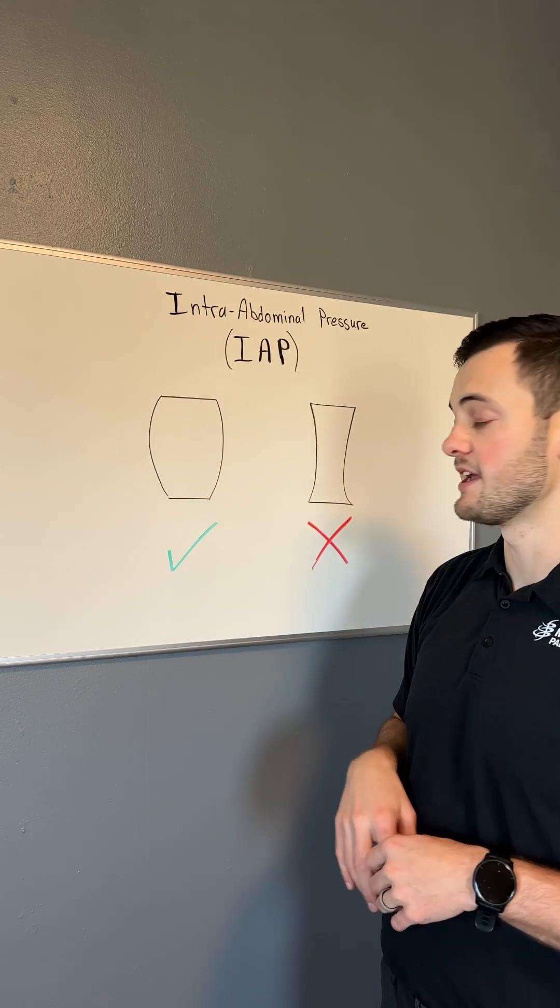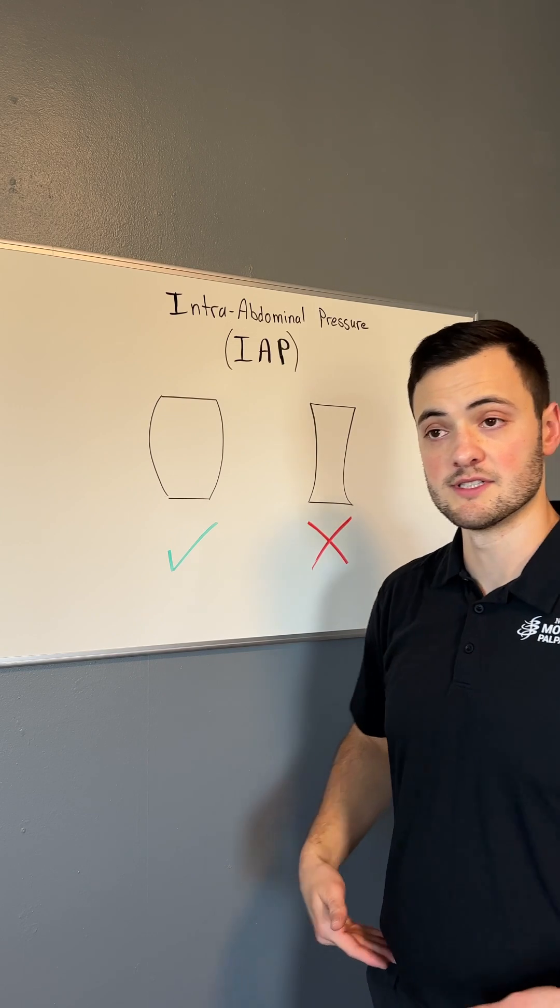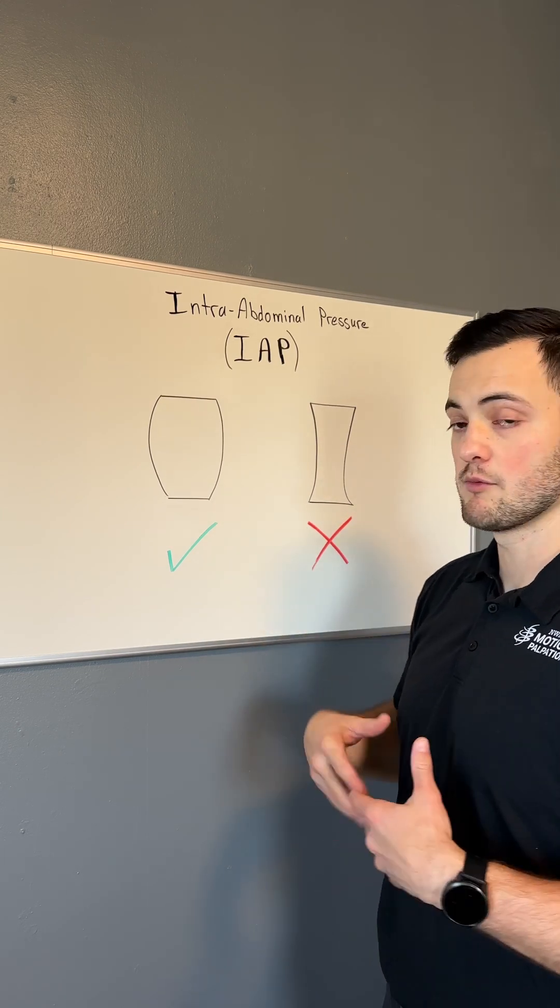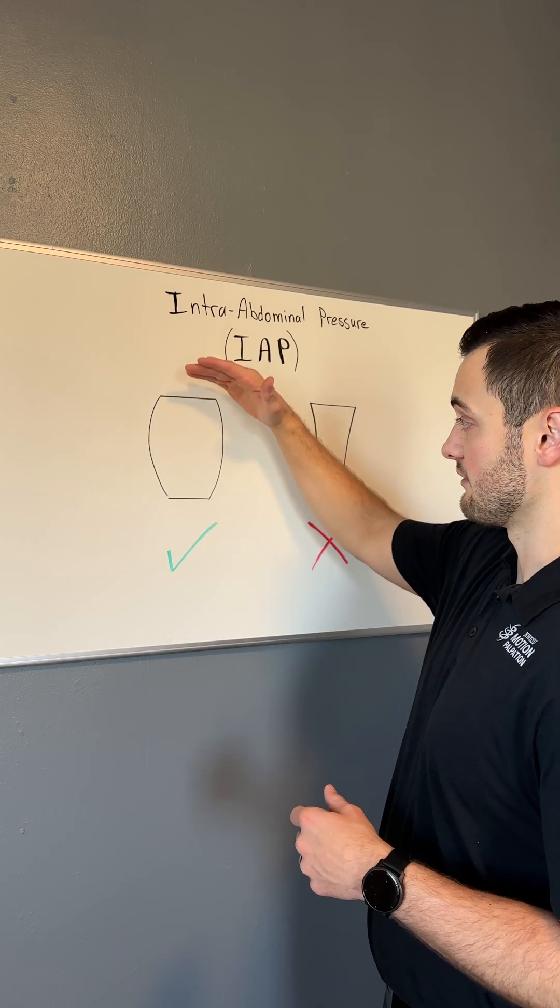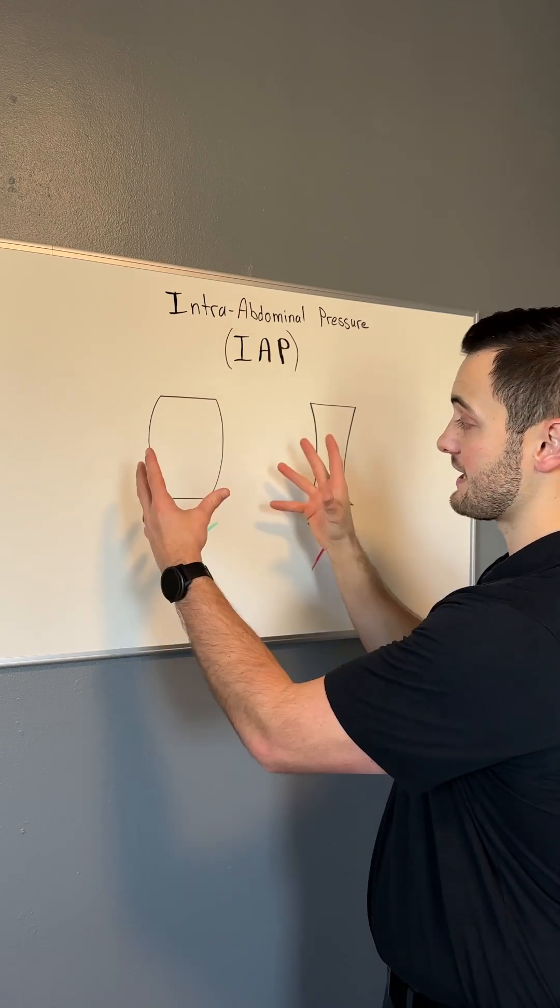This top line is the bottom of your rib cage. The bottom line is your pelvis or pelvic floor. When we breathe in, the diaphragm comes down below the rib cage and expands the abdomen.